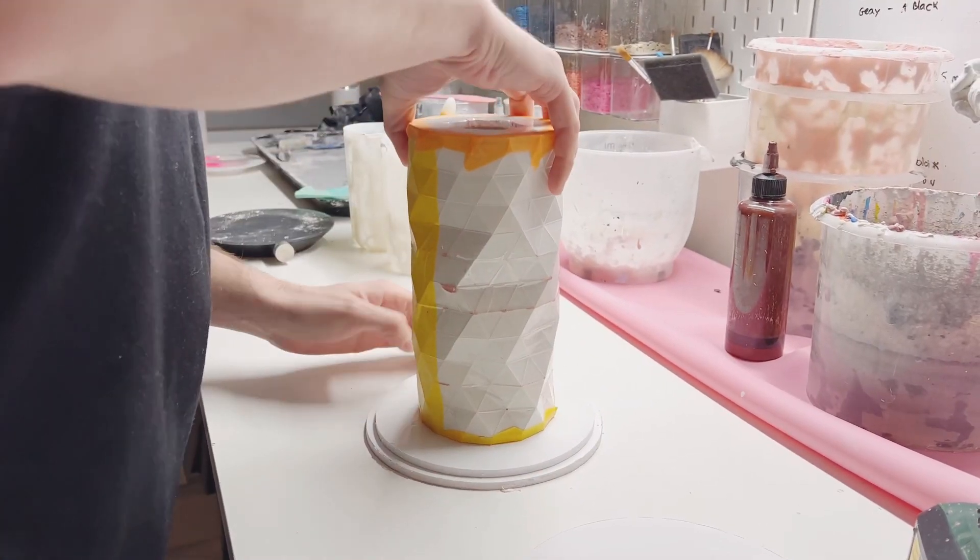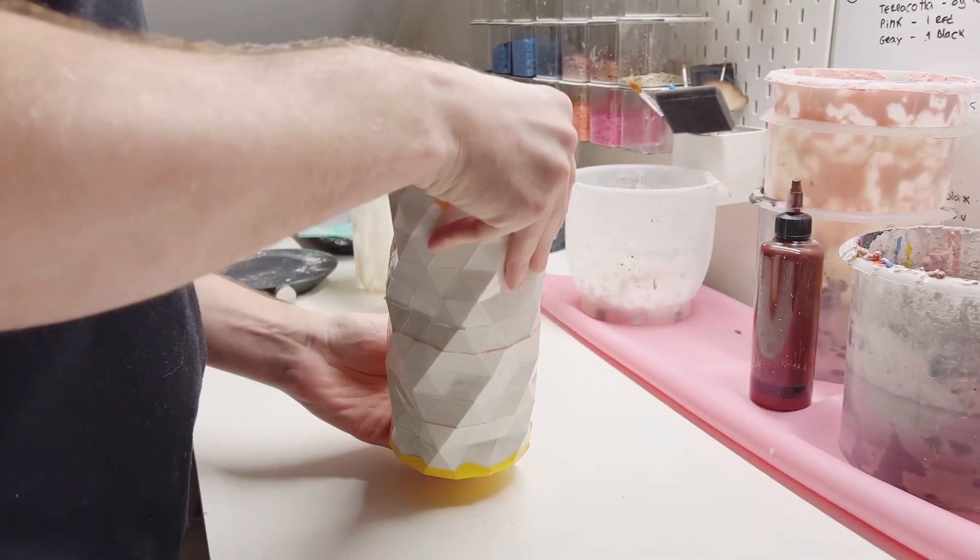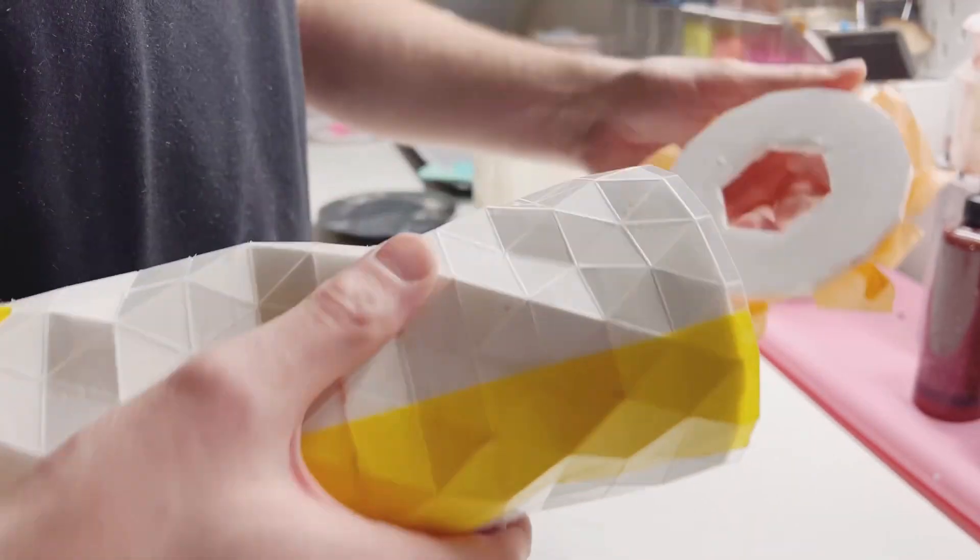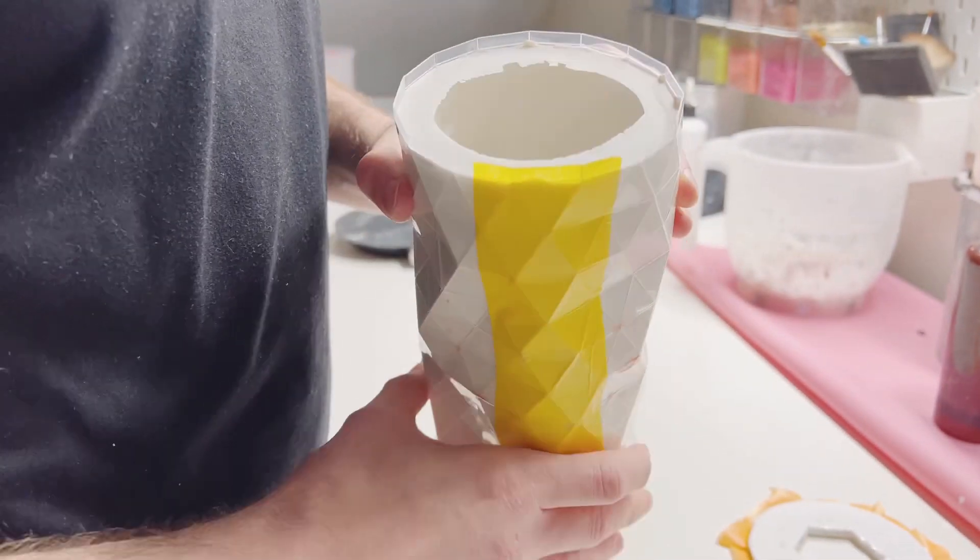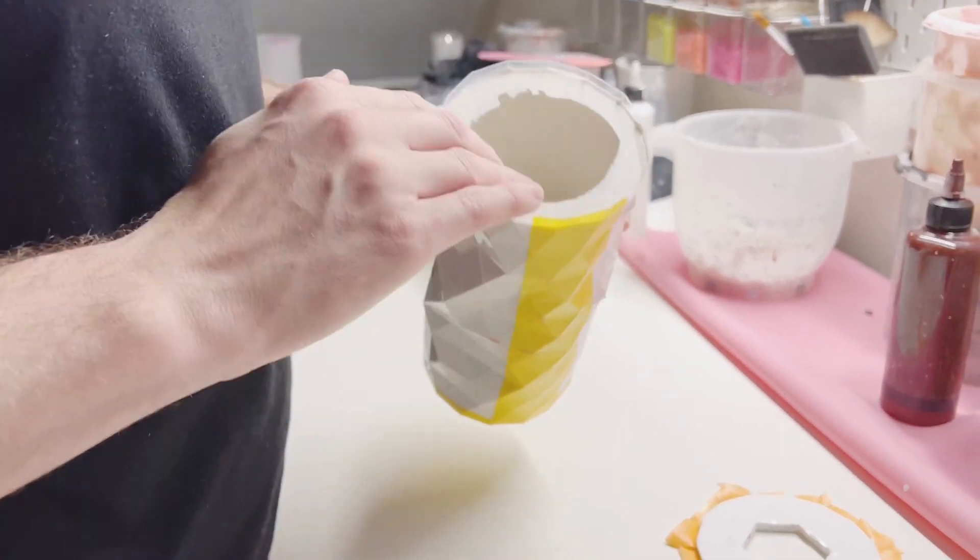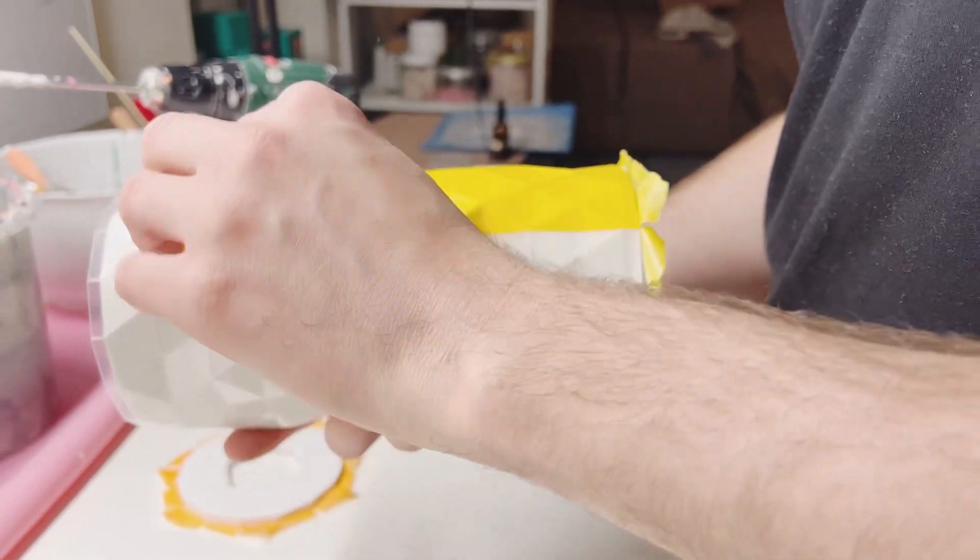The vase is ready, so let's unmold. We are super happy because the first time we tried this mold, one of the sides was way thicker than the other.